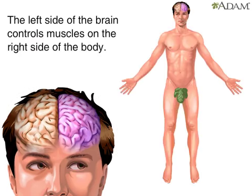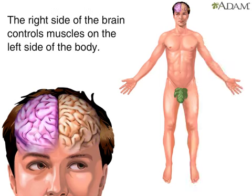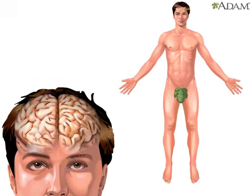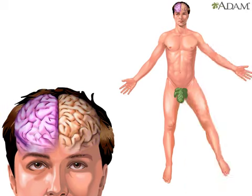Here, the left side of the brain is highlighted to show the control over right arm and leg movement, and the right side of the brain is highlighted to show the control over left arm and leg movement. The left side of the brain controls the muscles on the right side of the body, and vice versa.